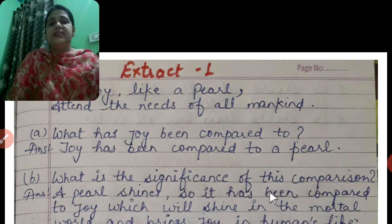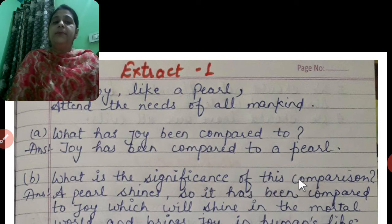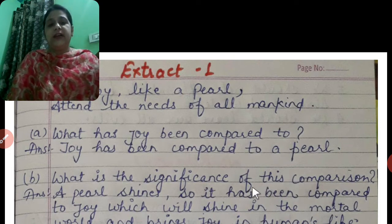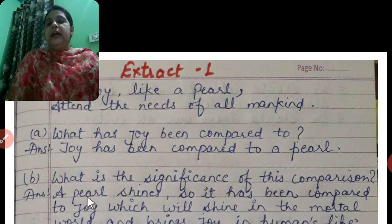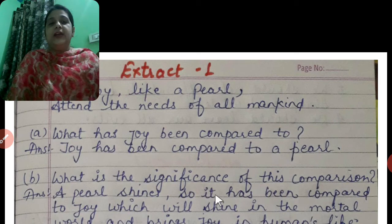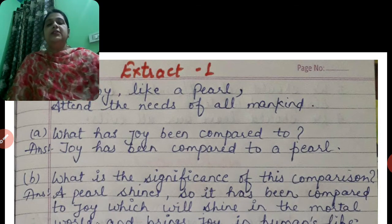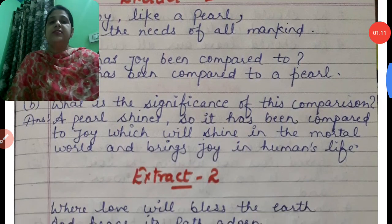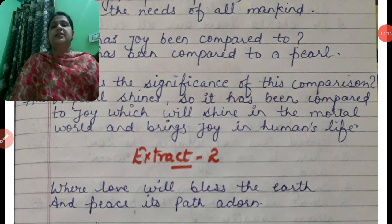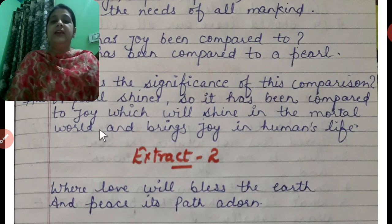What is the significance of this comparison? Joy ko moti se compare kiya gaya hai. The answer is: a pearl shines — ek moti jo hai wo chamakta hai. So it has been compared to joy, which will shine in the mortal world and bring joys in human life.